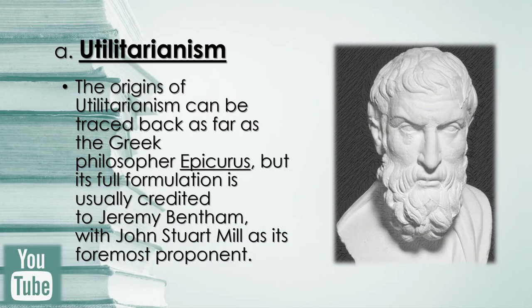One famous consequentialist theory is utilitarianism — from the Latin adjective 'utilis,' meaning useful. The origins of utilitarianism can be traced back as far as the Greek philosopher Epicurus, but its full formulation is usually credited to Jeremy Bentham, with John Stuart Mill as its foremost proponent. Utilitarian ethics in general is a kind of ethical theory that advocates the idea that human happiness is the measure of goodness. Happiness here is defined as the maximization of pleasure and the minimization of pain. There are two kinds of utilitarianism: psychological hedonism and egoistic hedonism.